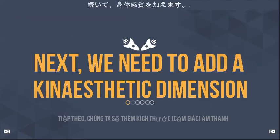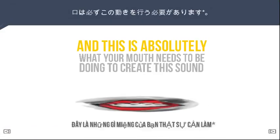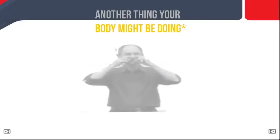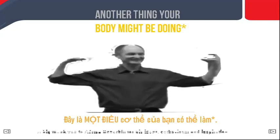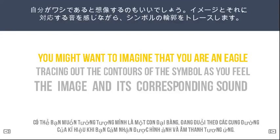Next up, we add a kinesthetic dimension. It's very useful to be aware of what your mouth is doing — this is what your mouth absolutely needs to be doing. Alternatively, you can mime it in some way. You might want to imagine that you are an eagle, tracing out the contours of the symbol as you feel the image and its corresponding sound.